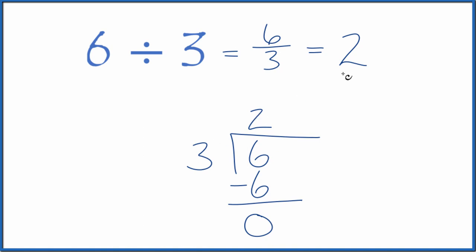6 divided by 3 is 2, and that's just like we found before. Do note that 6 over 3 and 2, they're equal. They're the same thing, just written differently.